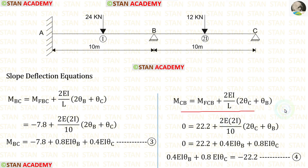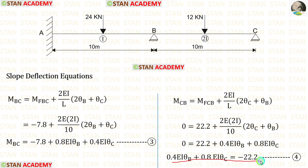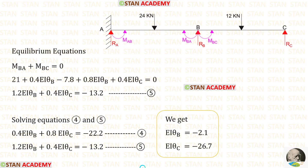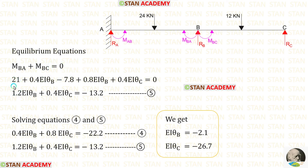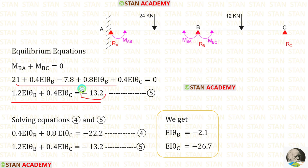The first equilibrium equation is made at point C: MCB = 0, so taking 22.2 to the other side gives the first equation. The second equilibrium equation is made at joint B: MBA + MBC = 0. Substituting the slope deflection equations for MBA and MBC and adding, we obtain the second equilibrium equation. We now have two equations — equation 4 and equation 5.